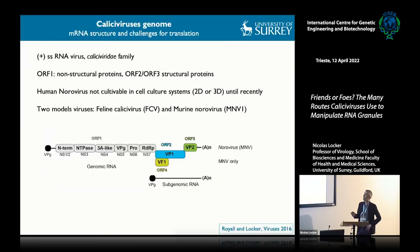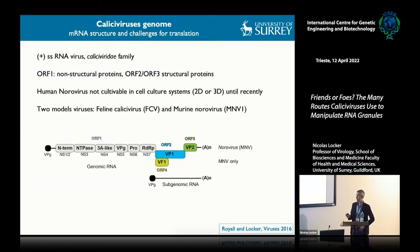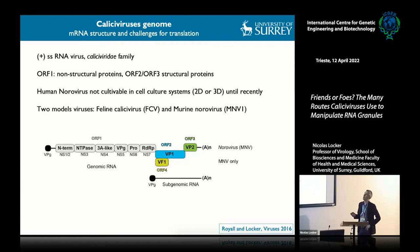Human norovirus is very difficult to propagate in cell culture, so we tend to work with two surrogate animal models: feline calicivirus and murine norovirus. The genome organization is very similar to other viruses such as picornaviruses, though I won't go into the detail of the genome structure as it's not directly relevant to this talk.